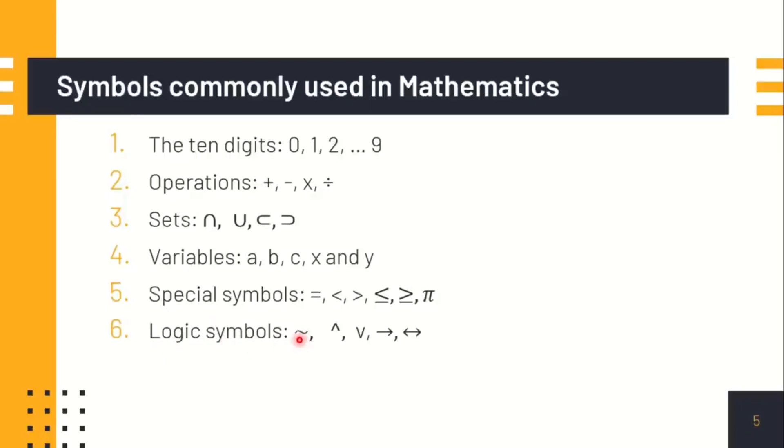Next are the logical symbols. First is the symbol for negation or the not. Next is the symbol for conjunction, the disjunction, the if-then statement, and the symbol for if and only if.